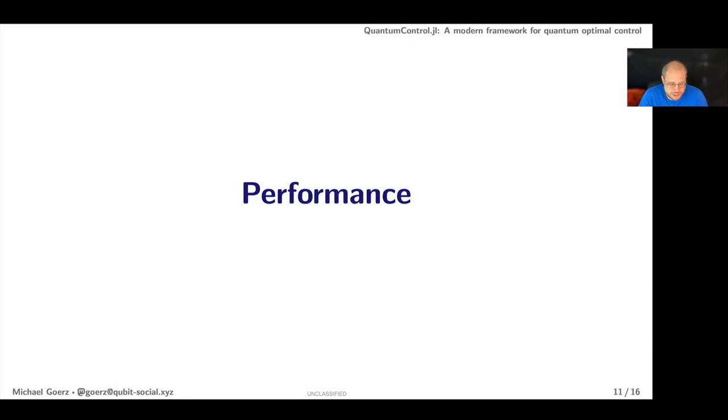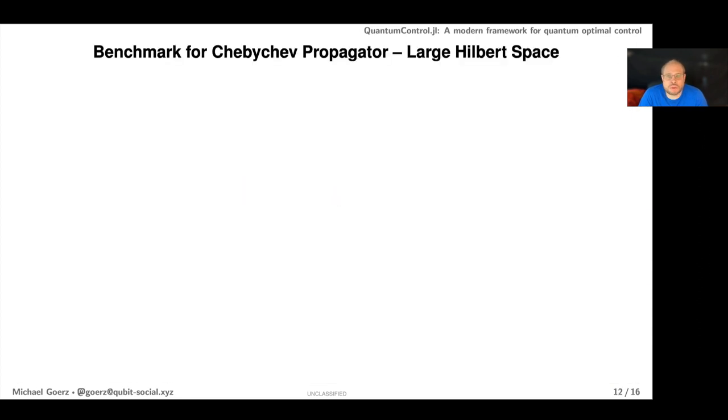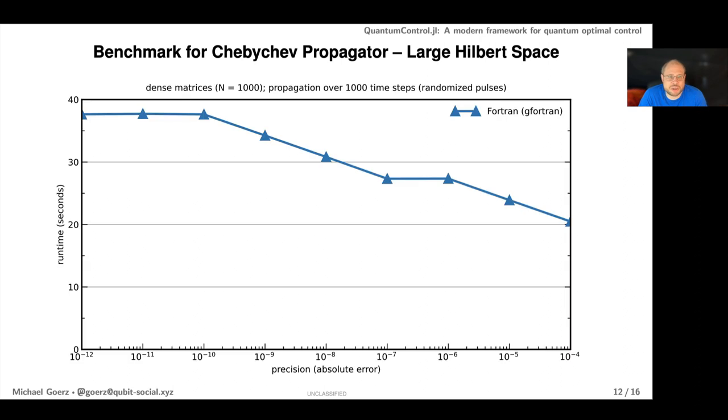What about performance? Let's look at the runtime for a time evolution using a Chebyshev propagator in a large Hilbert space, a thousand dimensional Hilbert space. We're looking at the runtime for simulating dynamics of a thousand steps for a Hilbert space of dimension 1000.